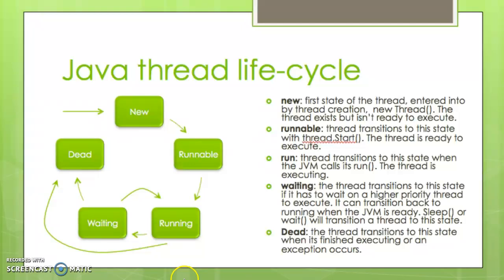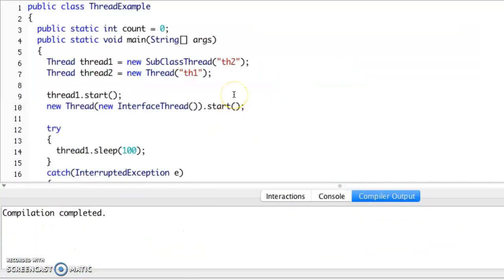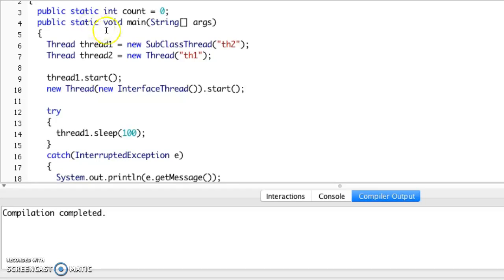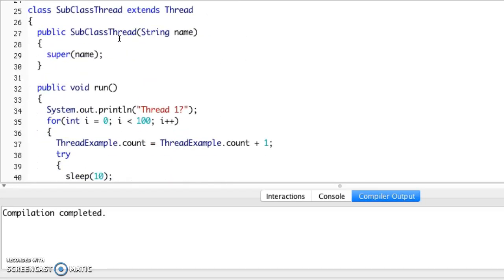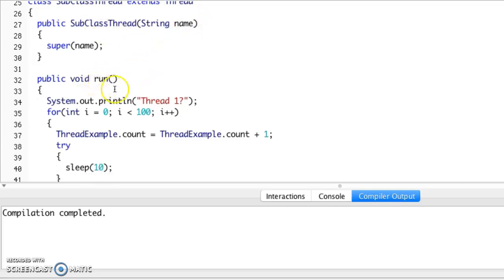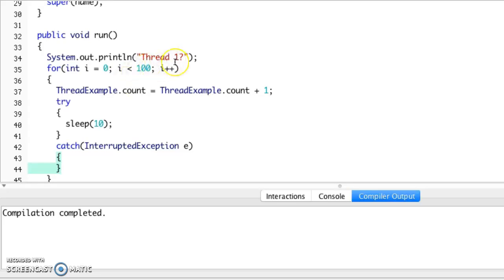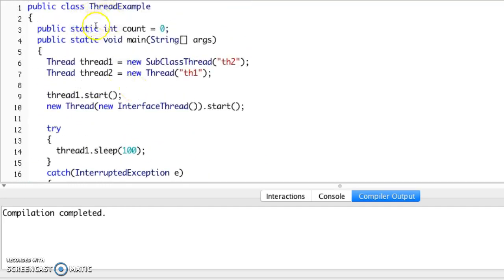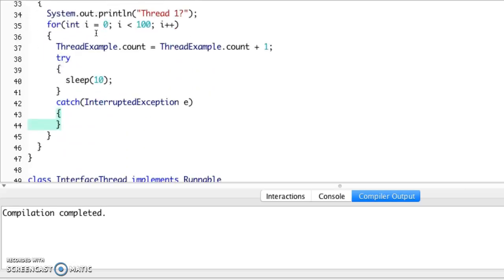Okay, so let's take a look at an example. In this example we're going to create a thread through the subclass arrangement where we're extending thread and then we override the run method. In this run method we're just going to have one print line, and then we're going to take a count, a static count variable that's actually defined in this thread example class, and we're just going to keep adding one to it over and over again. Every time we add to it we're going to call sleep on the thread, so the thread will go to sleep, it'll go into that waiting state.